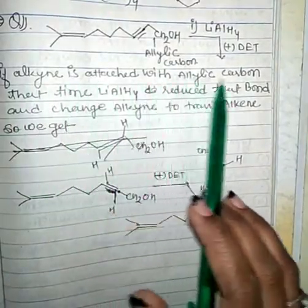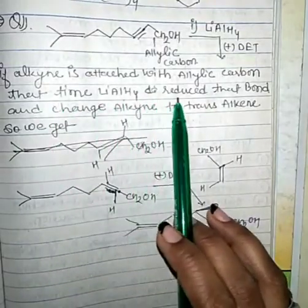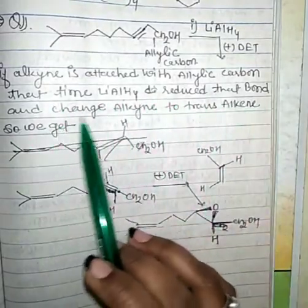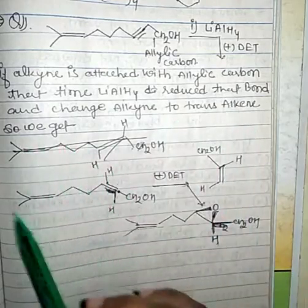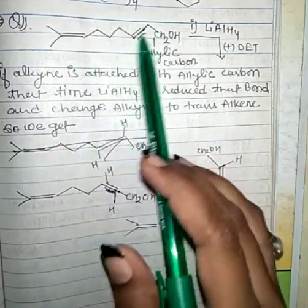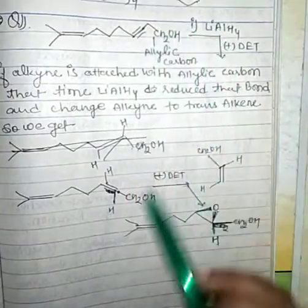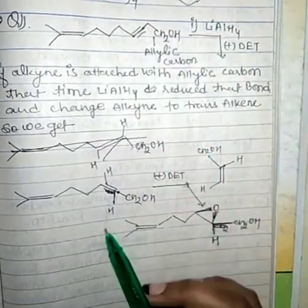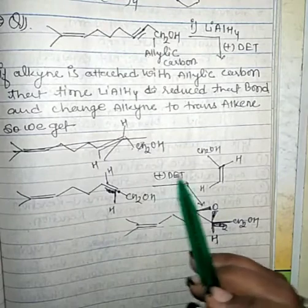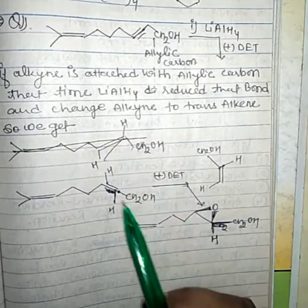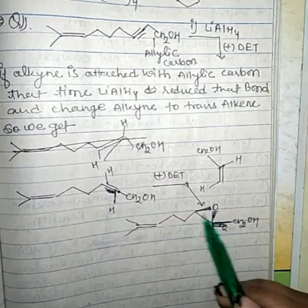When an alkyne is attached to the allylic carbon, LiAlH4 reduces that bond and converts the alkyne to a trans-alkene. So we first reduce the alkyne to an alkene, and then in the presence of (+)-DET we get the epoxide in the wedge position.